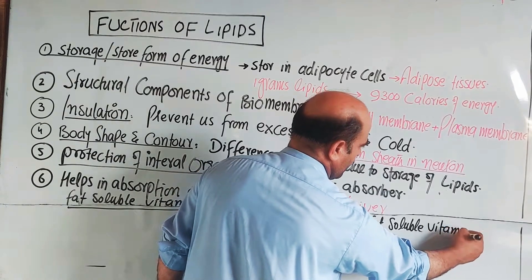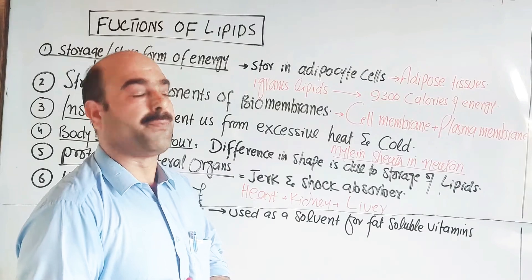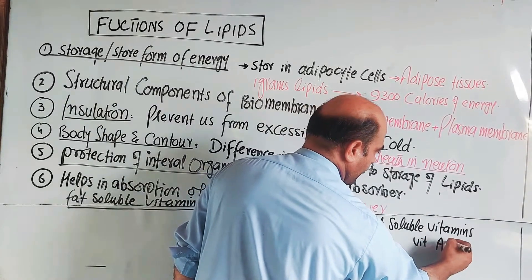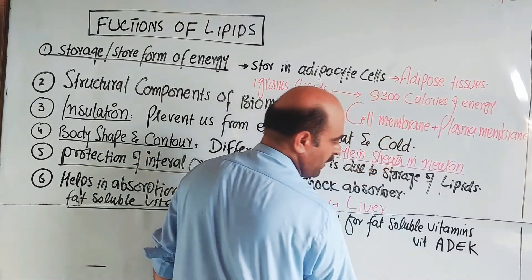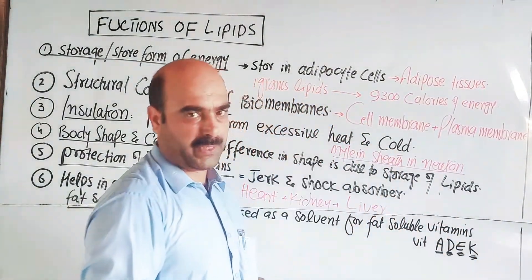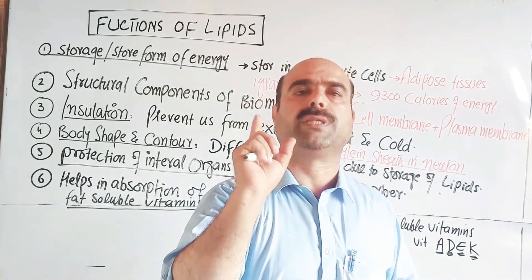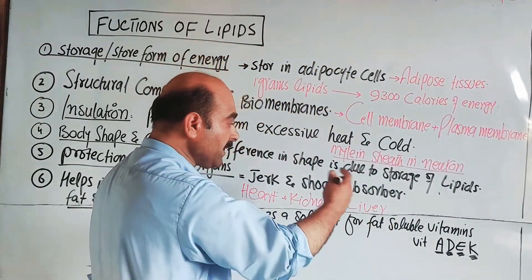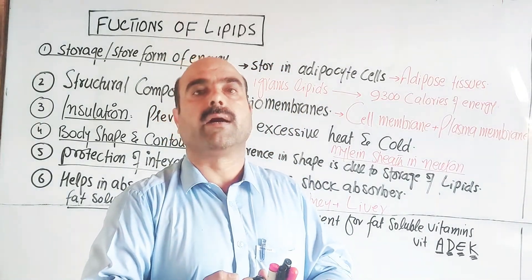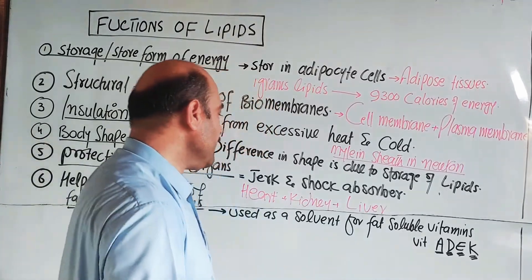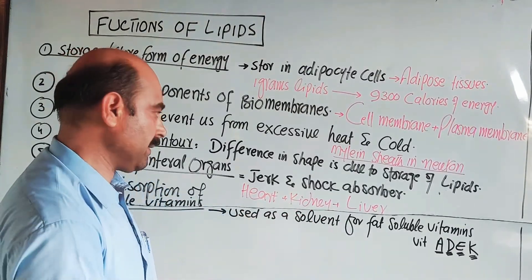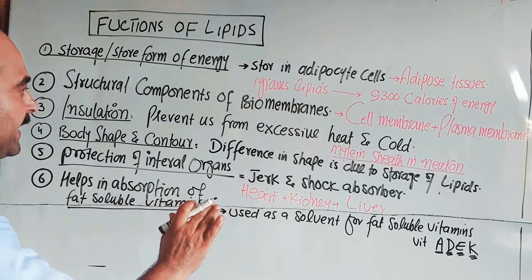Fat-soluble vitamins — vitamin A, D, E, and K — require fat or lipids to be dissolved and absorbed by the body. If lipids are present, these fat-soluble vitamins can dissolve and be properly absorbed. Without fats, fat-soluble vitamins cannot be absorbed effectively.